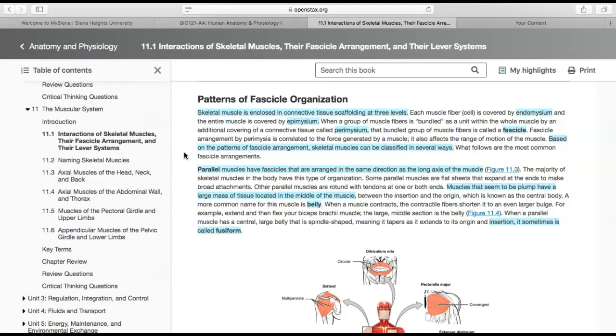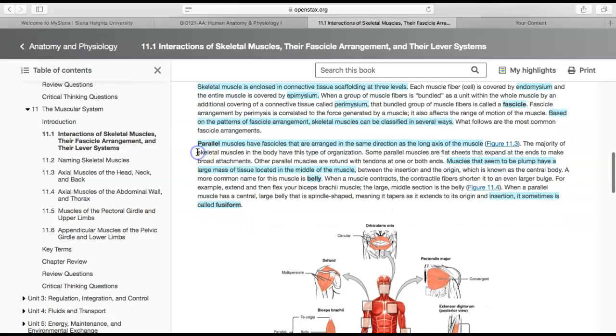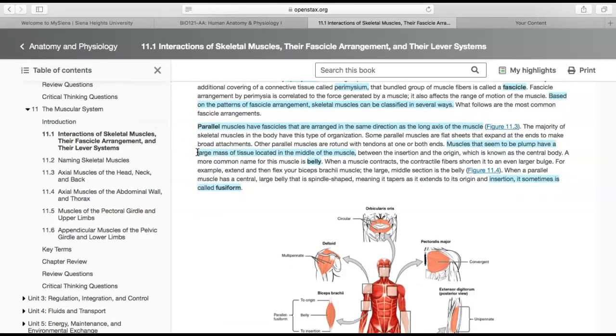Let's talk about the most common fascicle arrangements. The first one is parallel. Parallel muscles have fascicles arranged in parallel lines, the same direction as the long axis of the muscle. They run down the long length of the muscle, and the majority of skeletal muscles in the body are like this.